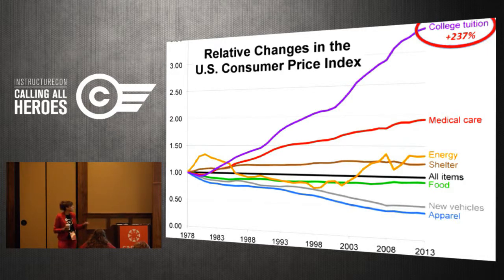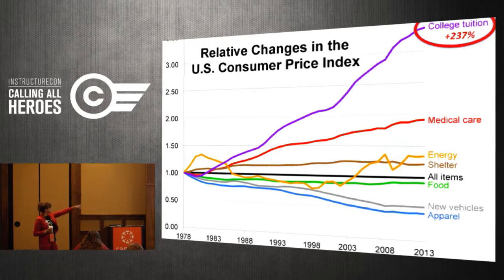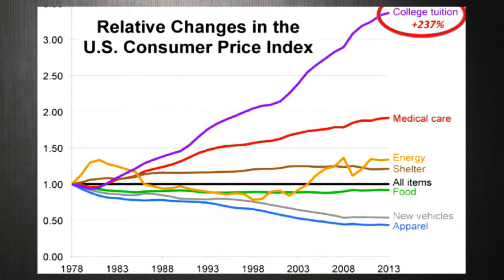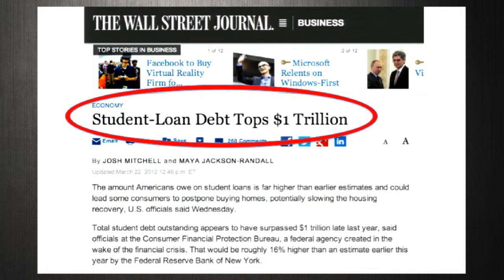What does this mean for education? College tuition since 1978 has grown 237% according to the U.S. Consumer Price Index. It's astronomical. Student loan debt is over a trillion dollars. A lot of you have seen these statistics before — they're alarming.